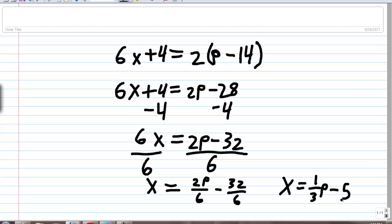We can reduce these into x being equal to p over 3 minus 5 and 1 third.